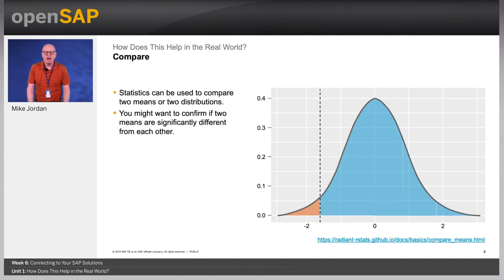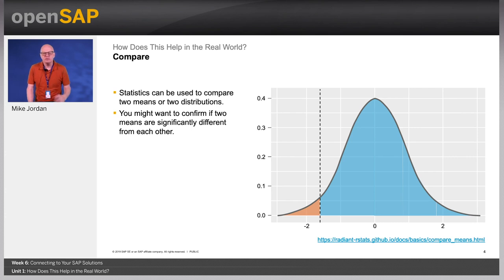Statistics can be used to compare two means or two distributions. You might want to confirm if two means are significantly different from each other. Perhaps the mean is almost the same for two sets of exam results for two class groups; you can then use standard deviation to check whether the spreads are significantly different. There are lots of useful calculators available on the internet, and you can also make these comparisons using Excel, R, Python, or a range of other statistical software.